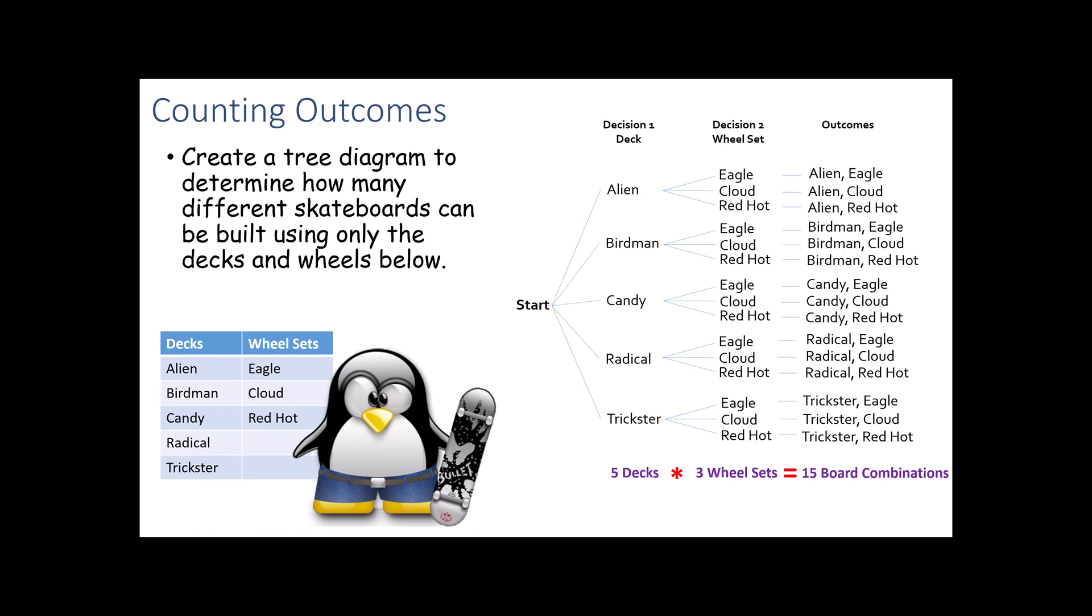For example, you will notice that in the last two videos, we dealt with this problem where you have a penguin who is trying to build a skateboard out of a set of deck options and wheel options. We talked about how that can be graphed out as a counting tree. We took that information and said if there are five decks and three sets of wheels, that means we have 15 different outcomes. We said if you take the number of choices for option one and multiply it by the number of choices for decision two, you will end up with the total number of possible combinations.